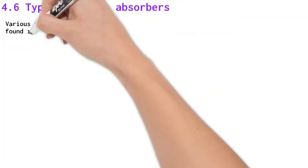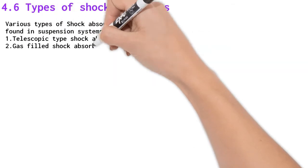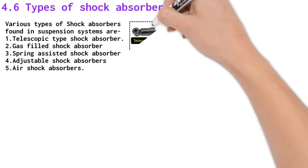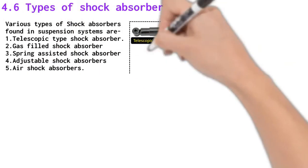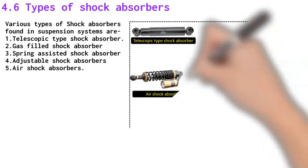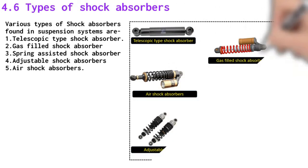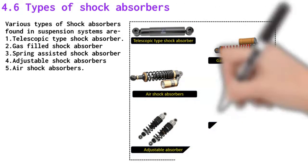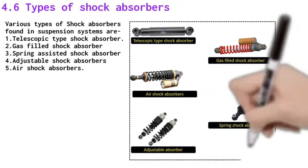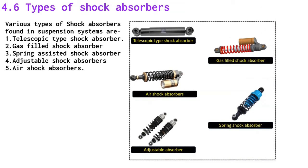Various types of shock absorbers found in the suspension system are: telescopic type shock absorber, gas filled shock absorber, spring assisted shock absorbers, adjustable shock absorbers, and air shock absorbers.